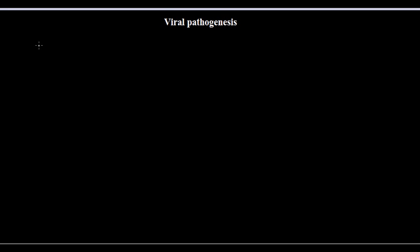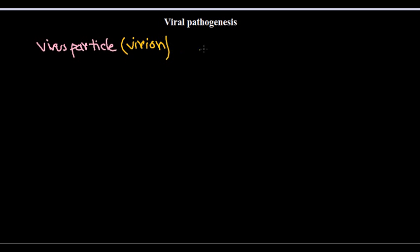The first process is the attachment of the virus particle to the host cell. The virus particle responsible for disease, which is present outside the host cell as a non-living thing, is called a virion. So you should know this terminology clearly — it is called a virion. Virions are not living; they are outside the host cell, and they are always finding a host cell for their entry.